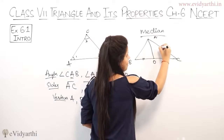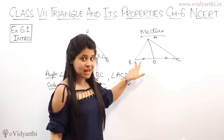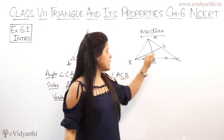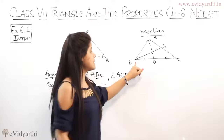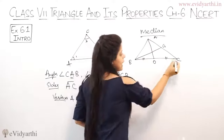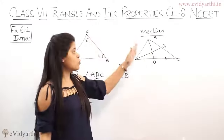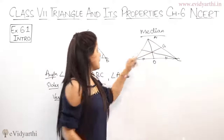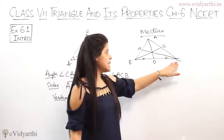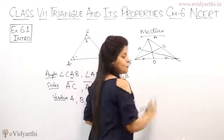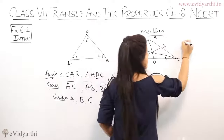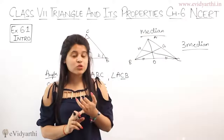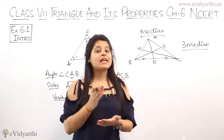Similarly, the midpoint of AC is here, and the median from vertex B goes to the midpoint of AC. From vertex C, the opposite side is AB, and the median goes to the midpoint of AB. So from C the median goes to point H, from B it goes to point G, and from A it goes to point O. This means that in one triangle you have three medians. A median is the line segment from a vertex to the midpoint of the opposite side, dividing it into two equal parts.